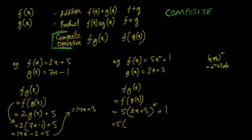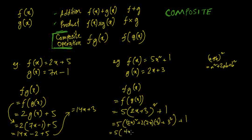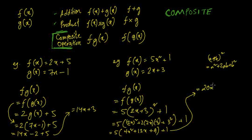Expanding: (2x + 3)² = 4x² + 12x + 9. So f(g(x)) = 5(4x² + 12x + 9) + 1 = 20x² + 60x + 45 + 1 = 20x² + 60x + 46. That's the composite function.